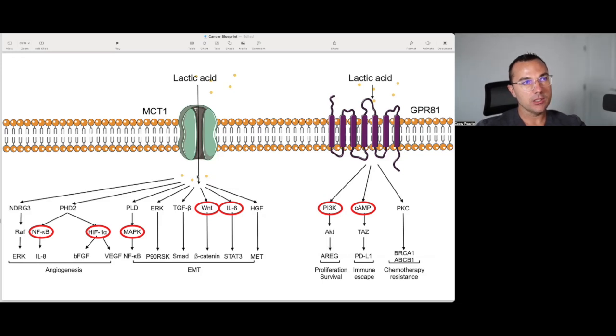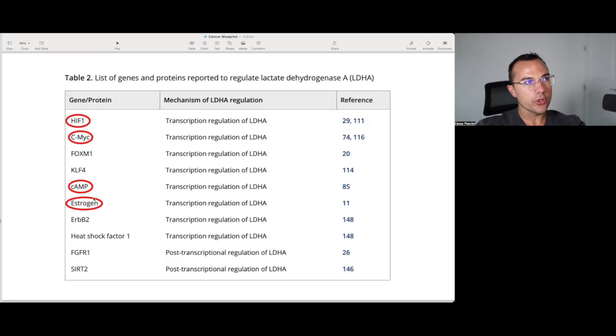...is what also upregulates the inflammatory cascades through NF-kappa B and other cytokines, HIF-1-alpha, MAPK, PI3K, AKT mTOR pathway, cyclic AMP. What I'm trying to say is that when lactic acid is created by lactate dehydrogenase, you'll see that a lot of these signaling cascades will then further upregulate lactate dehydrogenase, leading to a vicious cycle.